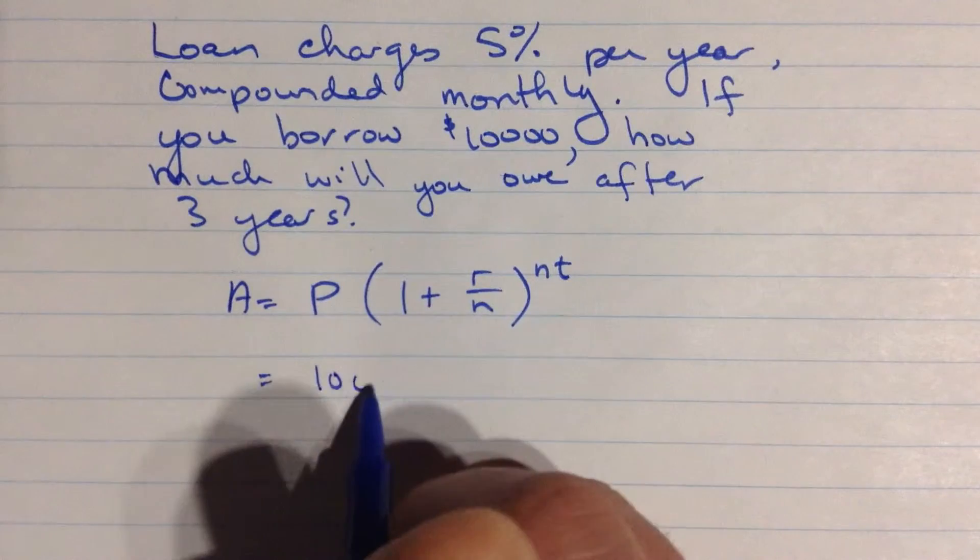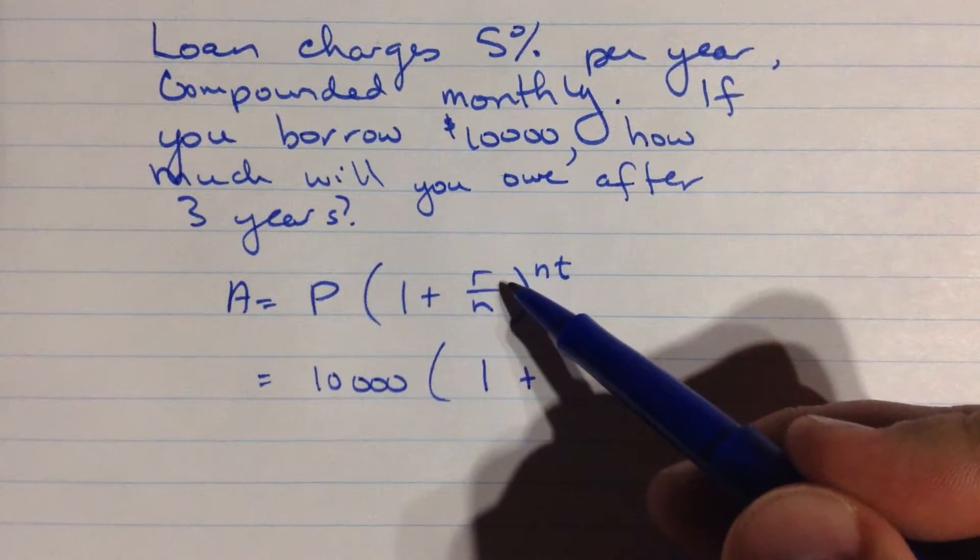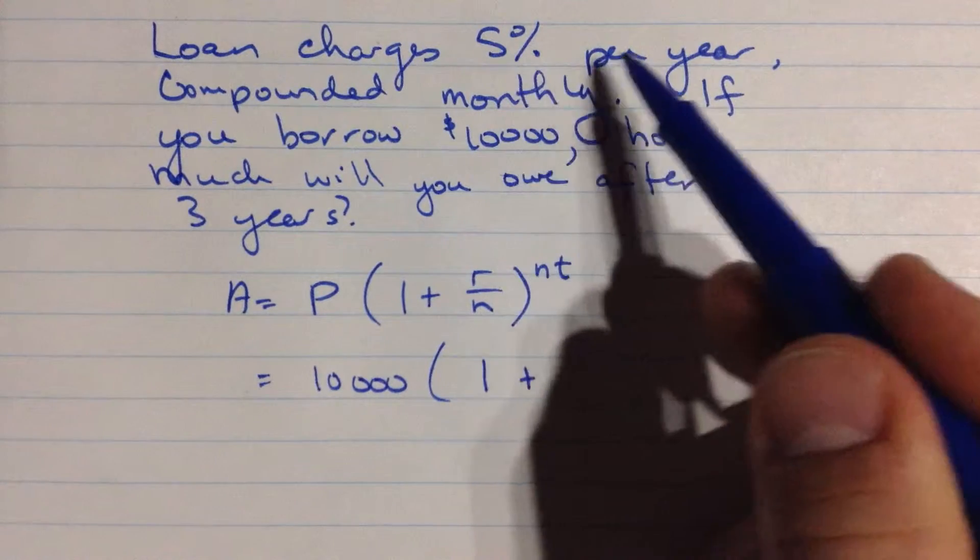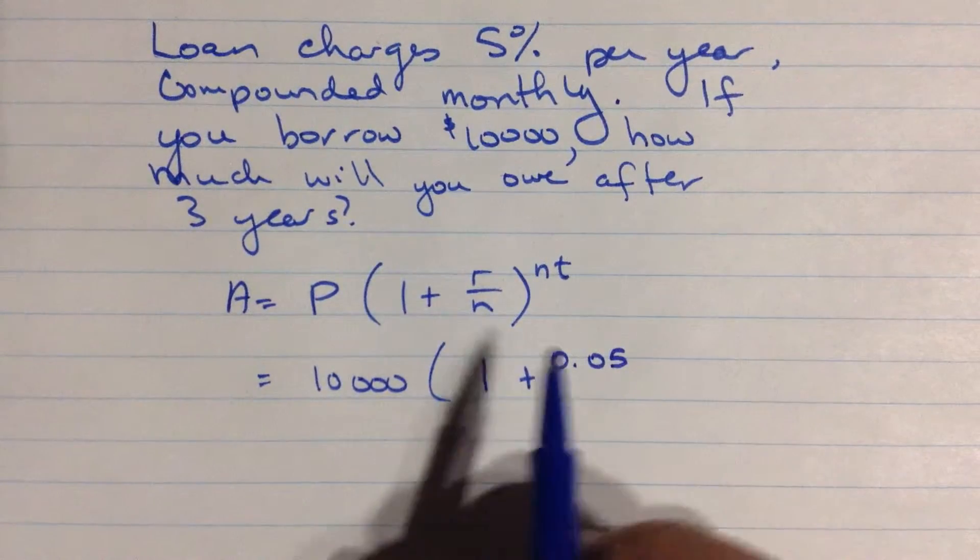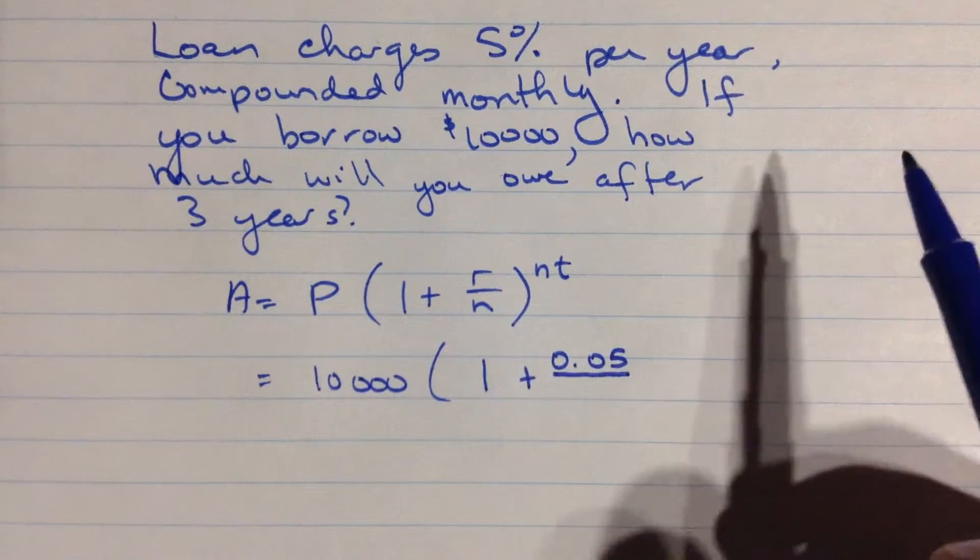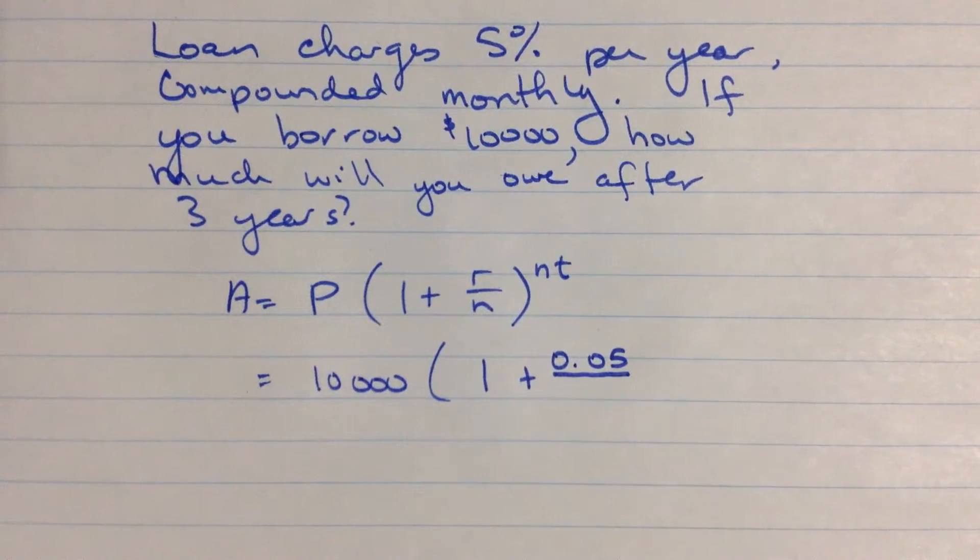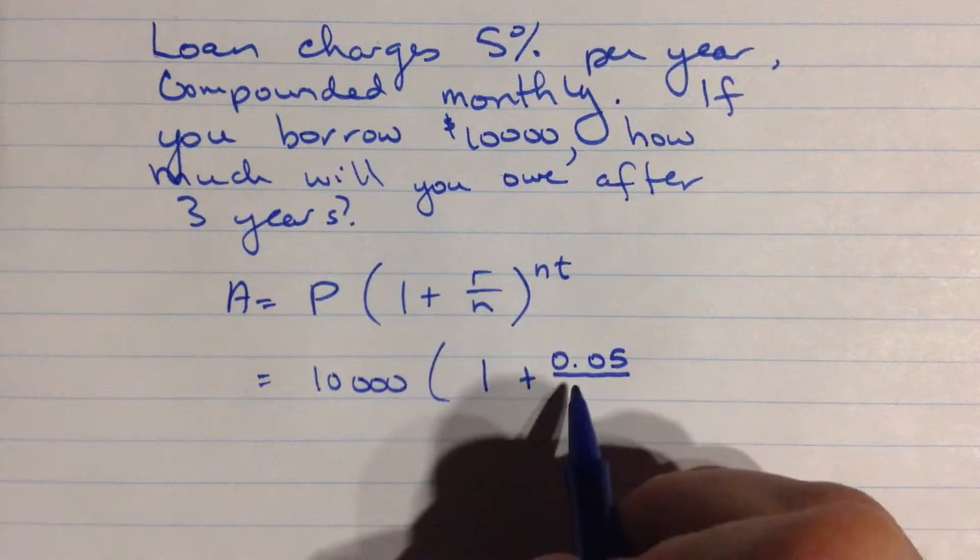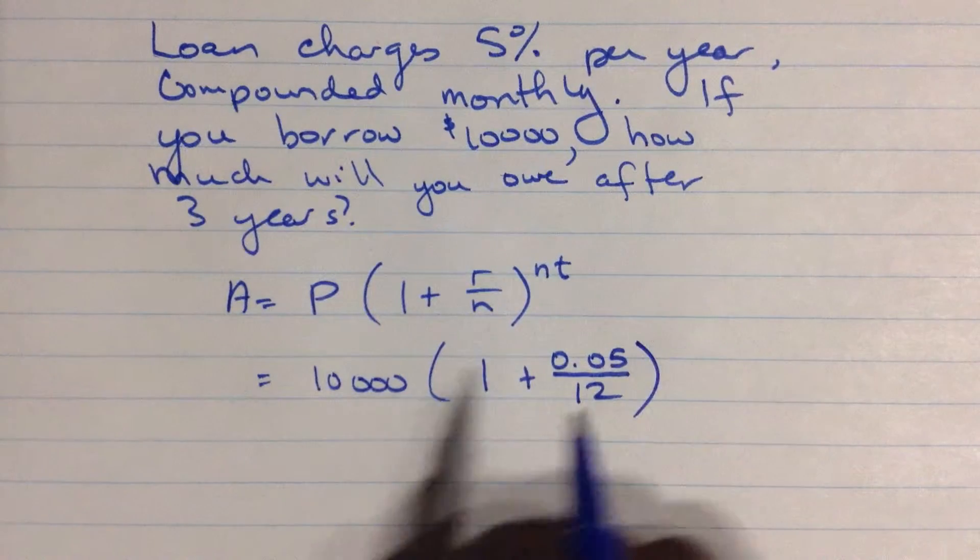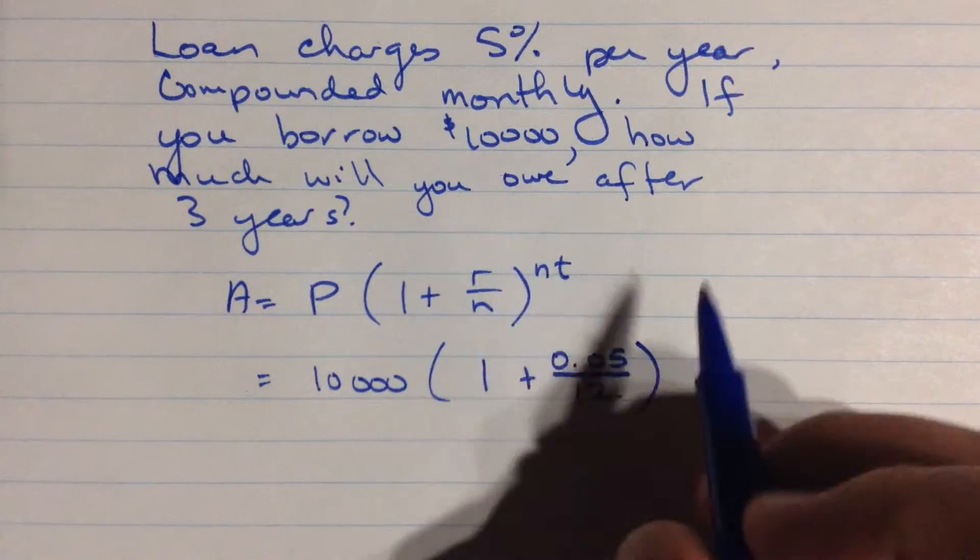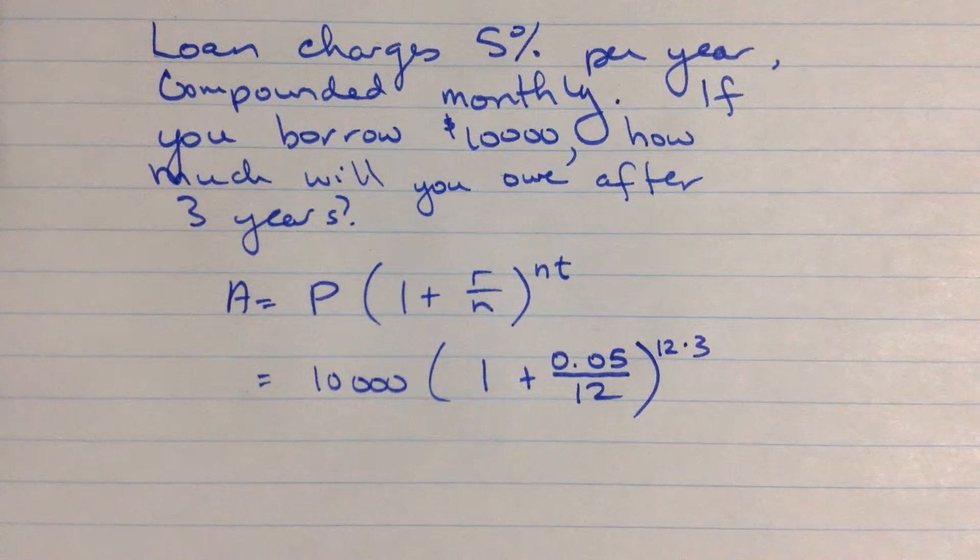So this is equal to the principal, 10,000, times 1 plus the annual rate is R. That's 5% per year, written as a decimal, 0.05. We divide it by how many compounding periods there are in a year. It's compounded monthly, 12 months in a year. And we raise it to the power of N times t. 12 times a year times 3 years in this case. So that'll be 36.